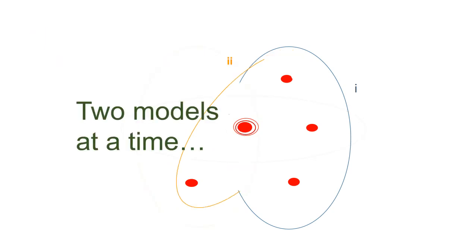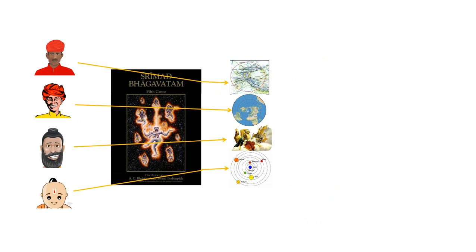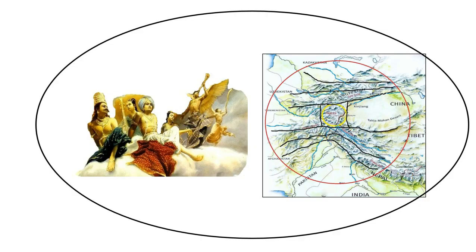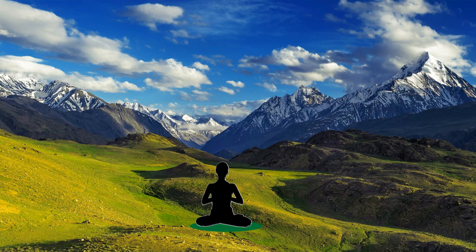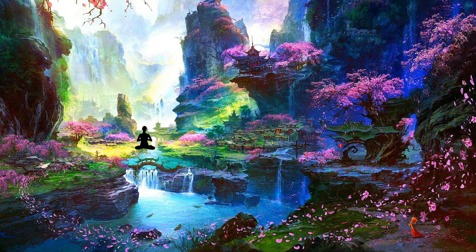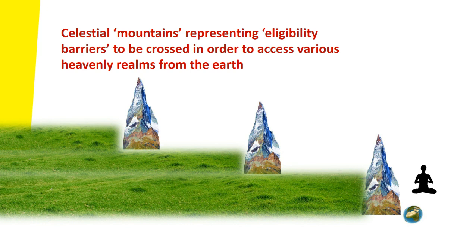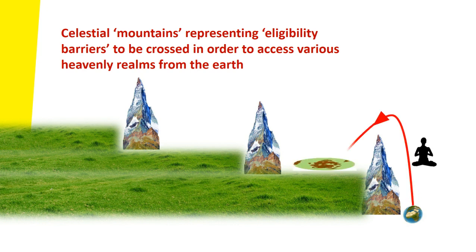There are our friends in the Bhagavatam and their different models. Encoded within the four models is further information — many more sub-models about the earth and its connection to other realms. For example, combining the topological map of Central Asia's mountainous regions with the demigod realms: it could be that within those mountain regions, great yogis with mystic powers and great sadhus are able to go in their subtle body and enter the heavenly realms. Celestial mountains representing eligibility barriers to be crossed in order to access various heavenly realms from the earth — that's a suggestion, but it makes sense.